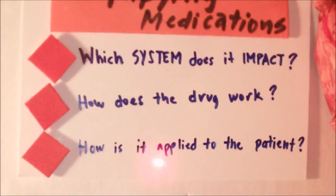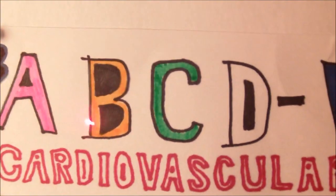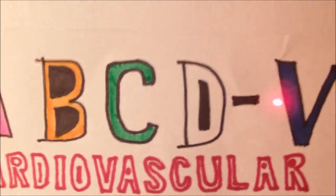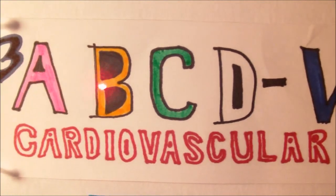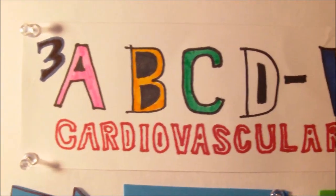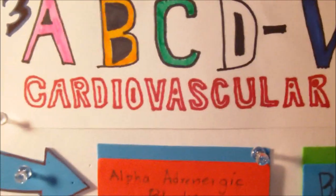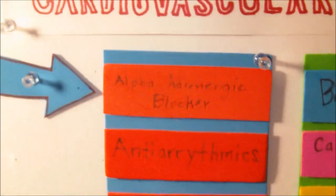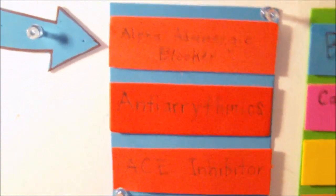Let's begin by taking a look at the cardiovascular system and the drugs that have an effect on it. For this system, we need to remember the initials 3ABCD/V. If we know this by heart, then we are ready for 95% of the cardiac drugs we may encounter in the NCLEX. Let's begin with 3A, or what I call AAA — and it helps to remember AAA batteries or the AAA vehicle company.